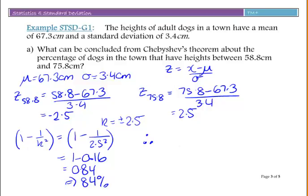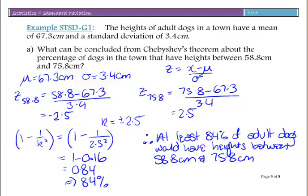Finish with the therefore statement. Therefore, at least 84% of adult dogs would have heights between 58.8 cm and 75.8 cm.